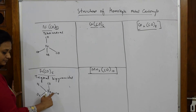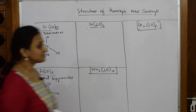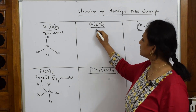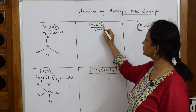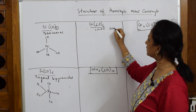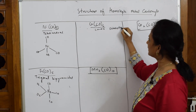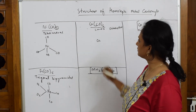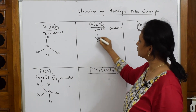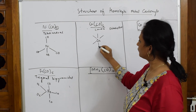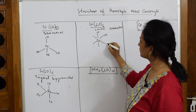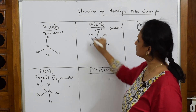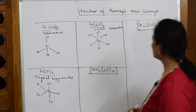Now for Cr(CO)₆, the coordination number is six, which means the shape of the molecule is octahedral. Draw the central metal atom in the center, then place carbonyls one, two, three, four, five, six on all sides. This is your octahedral structure.